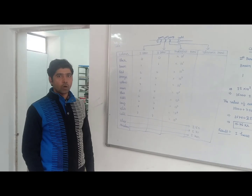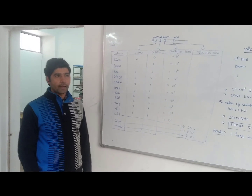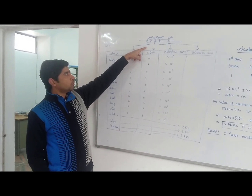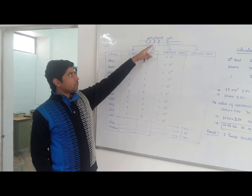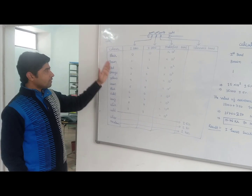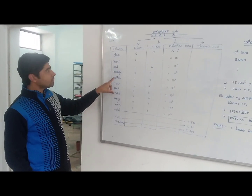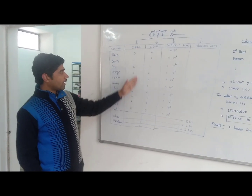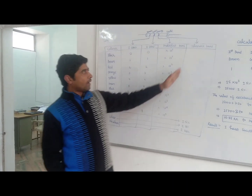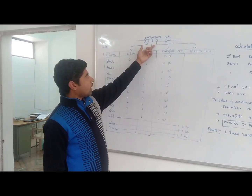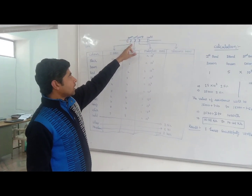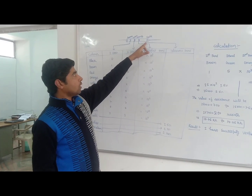Suppose I have a carbon composition resistor with color bands. This is the color coding table showing band colors, value of first band, value of second band, value of multiplier band, and value of tolerance. The resistor in our example has brown, green, orange, and gold color bands.